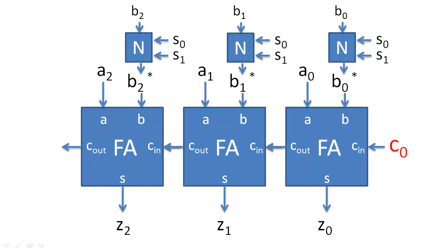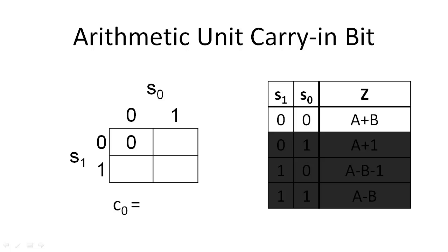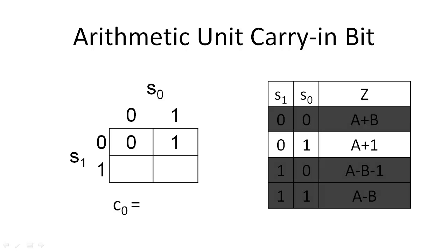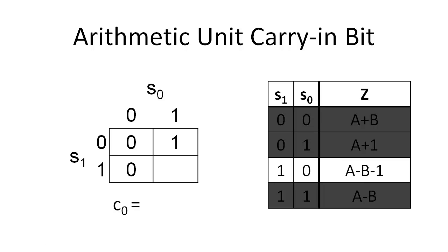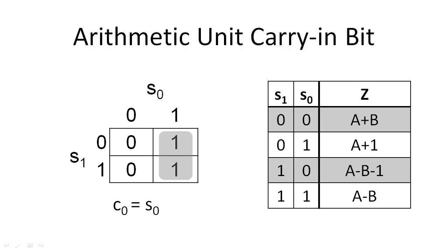Now that we have designed circuit N, we need to design the initial carry-in input C0. Again, we want to find a minimal solution for C0, so we will use a K map. When the selection input bits encode 0, we want to carry in 0. When the selection input bits encode 1, we want to carry in 1. When the selection input bits encode 2, we want to carry in 0. When the selection input bits encode 3, we want to carry in 1. By using the K map, we find our minimal expression for the carry-in.